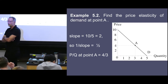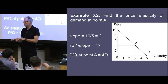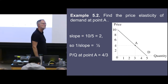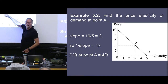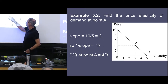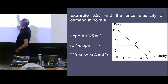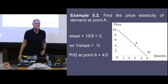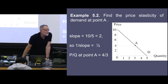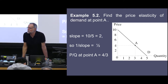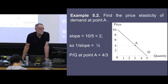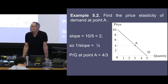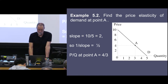If you remember similar triangles — triangles with the same angles — you can prove that the elasticity at point A also equals the length of the line segment from the horizontal intercept to A, divided by the length of the segment from A up to the vertical intercept. That's a useful shortcut for reading elasticity directly off a diagram.